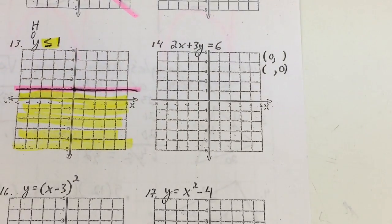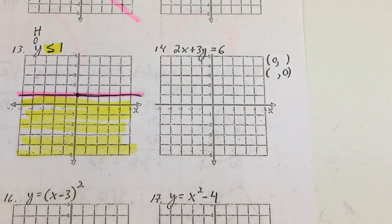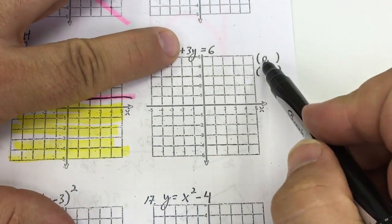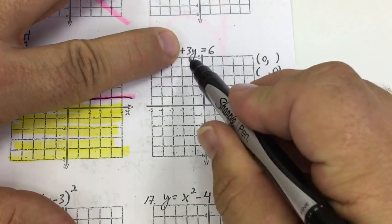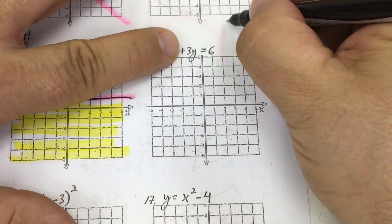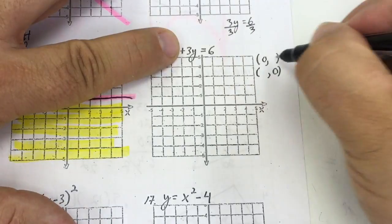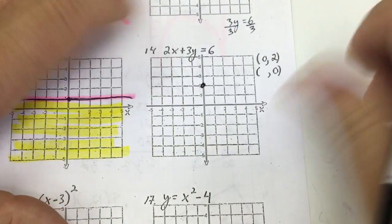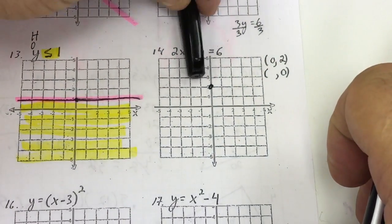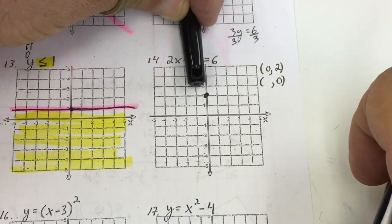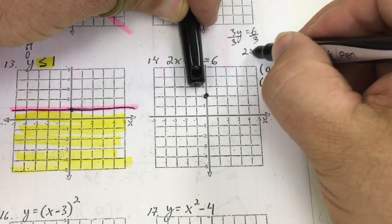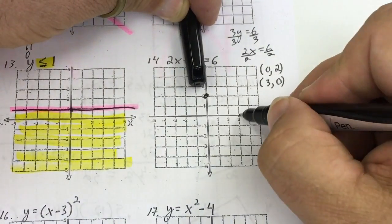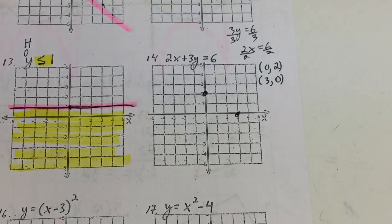I'm going to do a cover-up method for the standard form of this equation. To find the y-intercept, I cover up the x side — that means x equals 0. That leaves me with 3y equals 6, which gives me 2, so I have a point at (0, 2). Then I cover up the middle: 2x equals 6, divide both sides by 2, that gives me (3, 0). Then I just connect the dots.